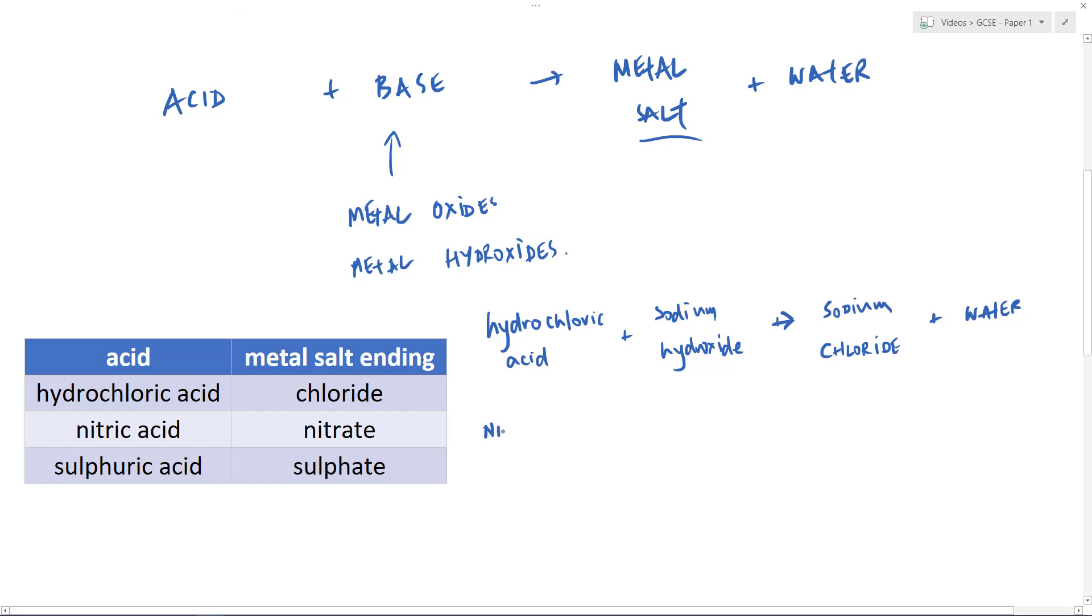Another example, just to use some other ones, if we had nitric acid, this time reacting with a different base, let's have potassium oxide, what we produce now? Same thing again, the metal, potassium, in this case nitric acid would give me a nitrate and finally water.